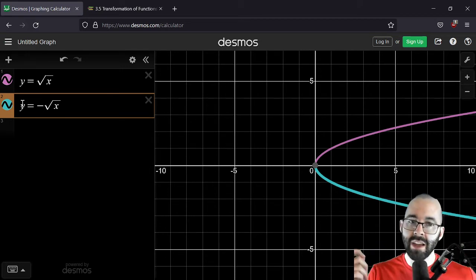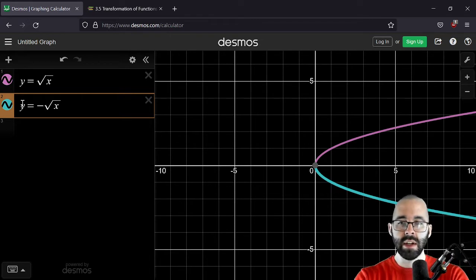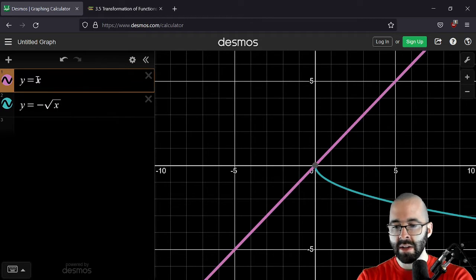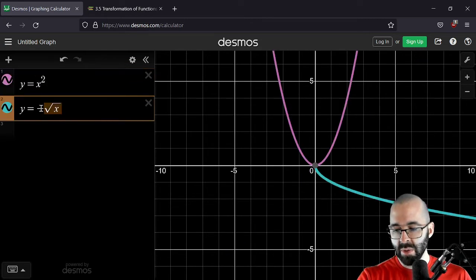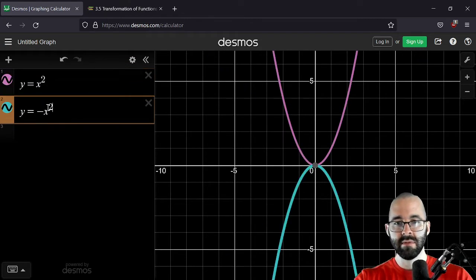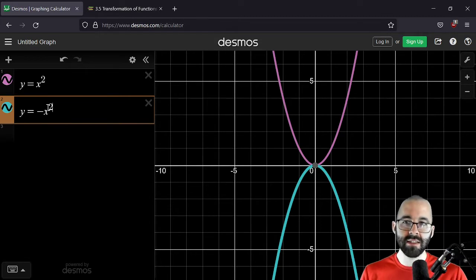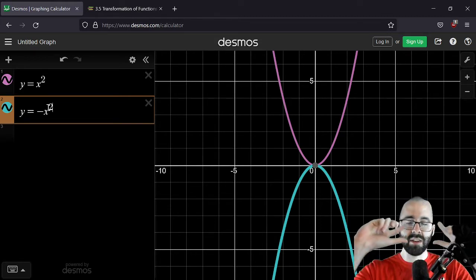That's going to be a big thing for this class, for this section. So again, this works with really anything that we want to talk about. Maybe x squared. We're going to flip this down. Reflect it over the x-axis, negative x squared. Flips it.